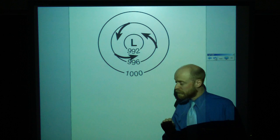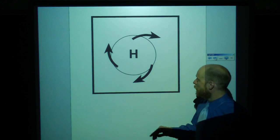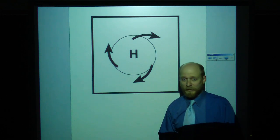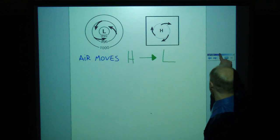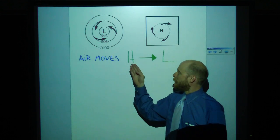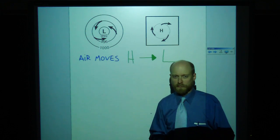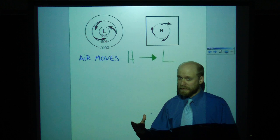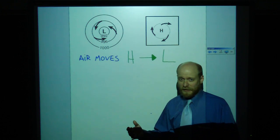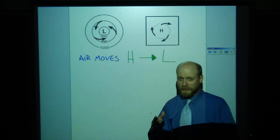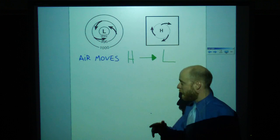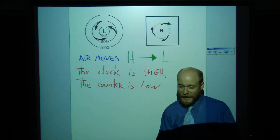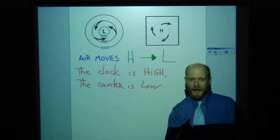Around a high pressure, they move outward and clockwise. First, what you need to know to remember that is air moves from high to low. It wants to reach equilibrium, so that's why it moves out of a high and into a low. And the direction, how do you remember clockwise, counterclockwise? You ready for it? This is the phrase that pays right here. The clock is high and the counter is low. Know it.